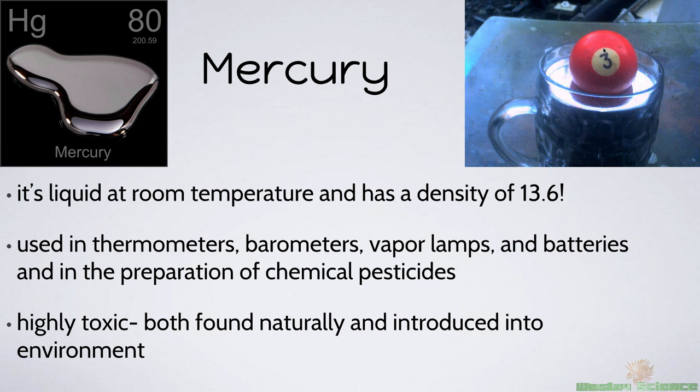Even gold has a density of about 19, so mercury is almost as dense as solid gold — that's crazy. There's a pitcher here with a mug full of mercury and a pool ball sitting on top of it, so the liquid is so dense it can balance things that are heavy on top of it, even though it's a liquid. We used to use mercury in tons of different stuff — we put it everywhere, just like we put lead everywhere. That's sarcasm, by the way. It was used in thermometers, barometers, vapor lamps, batteries, and even in the preparation of chemical pesticides. Remember, pesticides go on food.